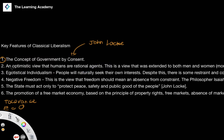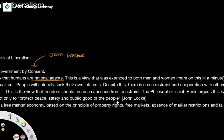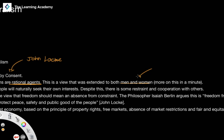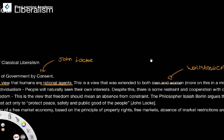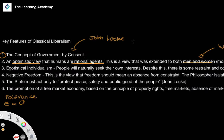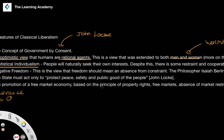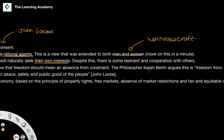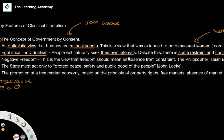Classical liberalism takes an optimistic view of humans as rational agents — humans have an innate rationality. This is extended to both men and women, which we'll see when we look at Wollstonecraft. She emphasises that liberal ideals and the concept of human nature under liberalism should extend to both men and women, and that historically this hasn't happened. There's also the concept of egotistical individualism — the idea that people naturally seek their own interests.